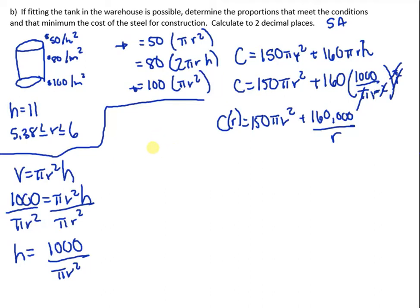So now from part A we know that the domain is over here. This is the domain. The radius has to be between 5.38 and 6. What does this mean to our question? Well, those are the two of the endpoints that we have to test. And then we also have to find the derivative of C at r.